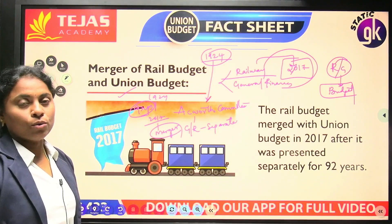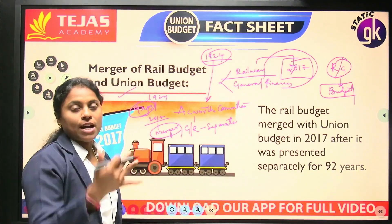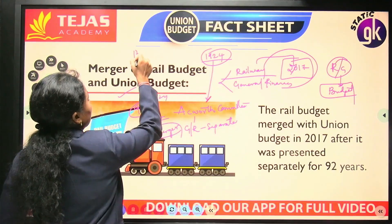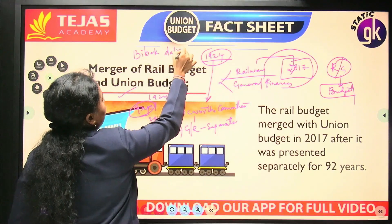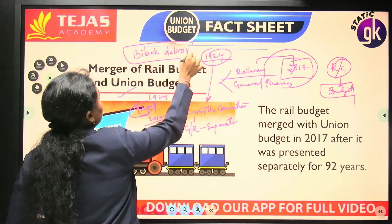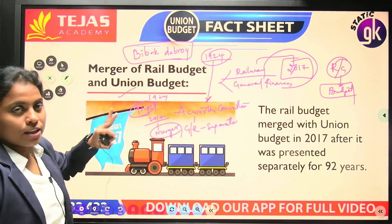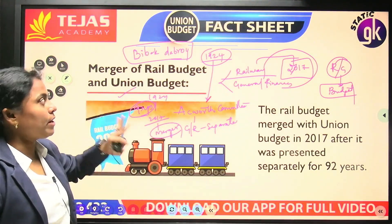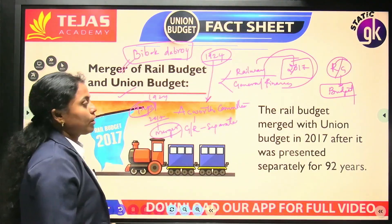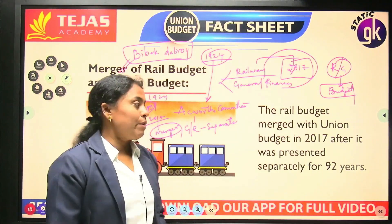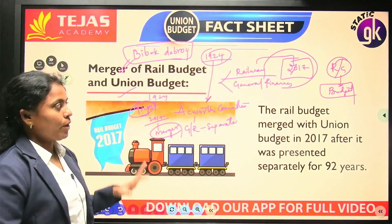In 2017, it was the Vivek Debray Committee recommendation that led to the merger of the railway budget with the general budget. Vivek Debray is a member of NITI Aayog. His committee was formed around 2015–2016 and recommended that there is no necessity for a separate railway budget. On his recommendations, there was an amalgamation of the railway budget with the general budget. This is very important to remember regarding the budget.